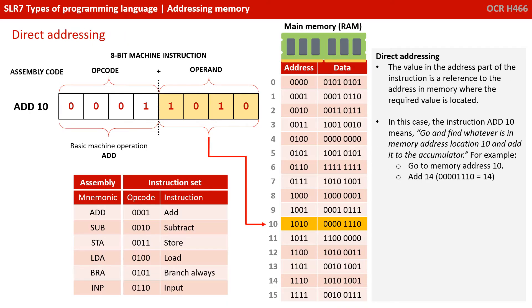With direct addressing, the value in the address part of the instruction is a reference to the address in memory where the required value is located. So, in this case, the instruction ADD 10 means go and find whatever is in memory address location 10 and add that to the accumulator. For example, we go to memory address 10 (1010) and we find 14. And that's what we add, because 00001110 is 14.